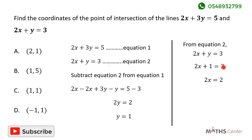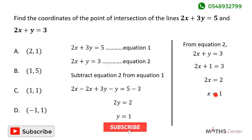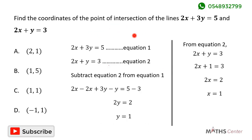So 2x equals 3 minus 1, which gives 2. Dividing both sides by 2, x equals 1. This means the x-coordinate of the point of intersection is also 1. So the x-coordinate is 1 and the y-coordinate is 1, meaning the coordinates of the point of intersection are (1, 1).